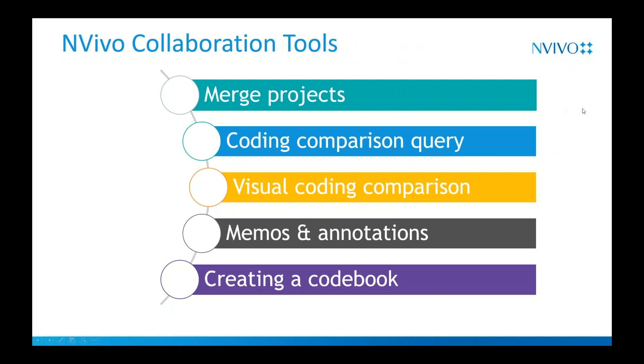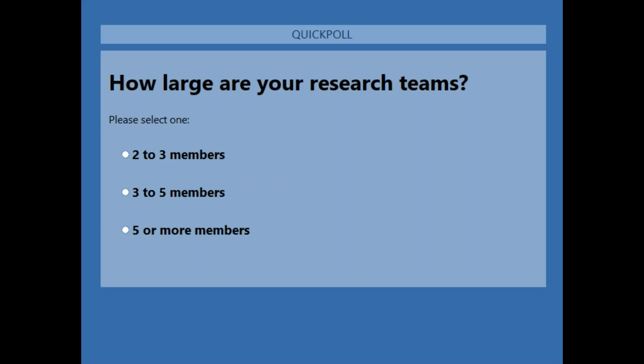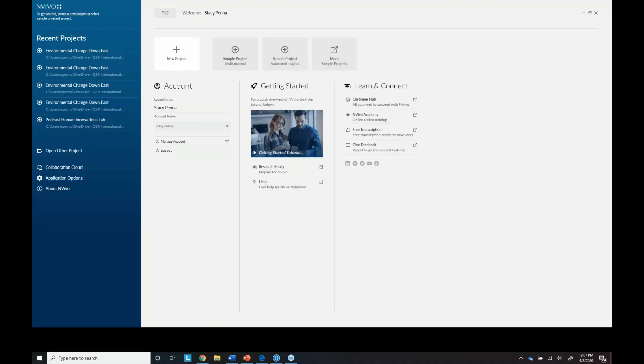Before I go to the software, I want to put up the next poll — how large are your research teams? Two to three people, three to five, or five or more? The poll is telling me about 42% are two to three members, 47% three to five, and 9 to 11% five or more. At least it's always fun to get data.